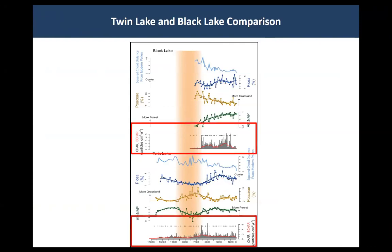Looking at the charcoal record: around 6,000 years ago, once the forest came back down to lower elevations, we see a huge increase in charcoal — we believe that's representative of more biofuel to burn, more trees around. Going towards present day at Twin Lake, there's an increase in fire frequency. At Black Lake, there's also an increase in charcoal accumulation in the late Holocene at a time when pollen suggests things were getting colder and wetter. That could be a signal of either increased climate variability or a sign of human burning.